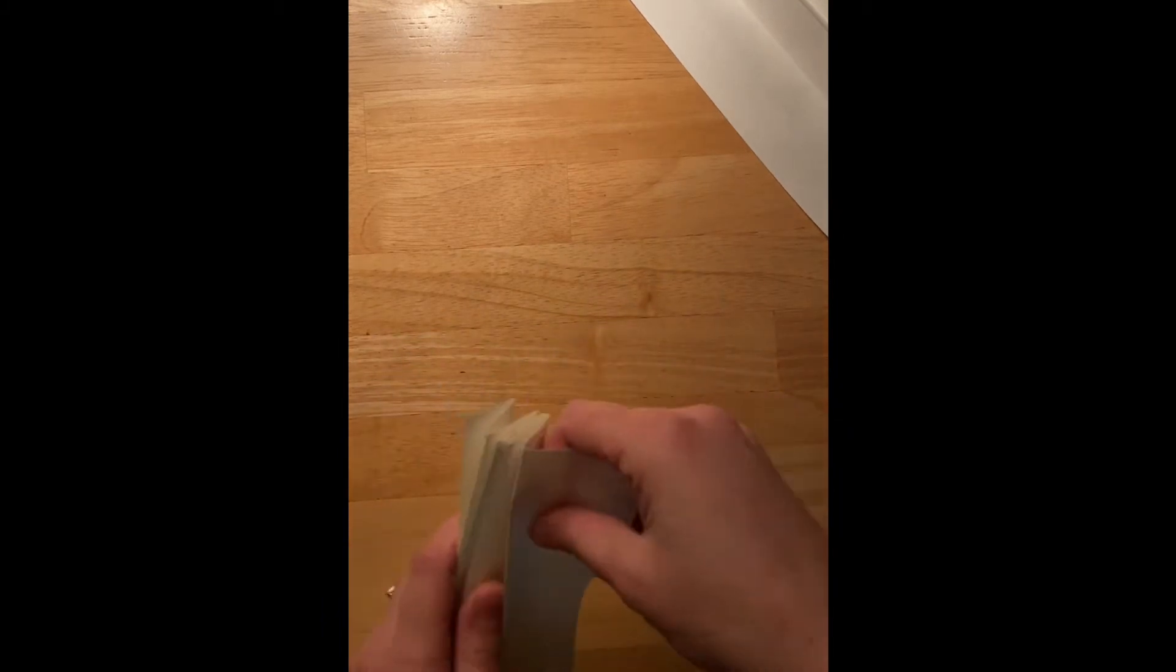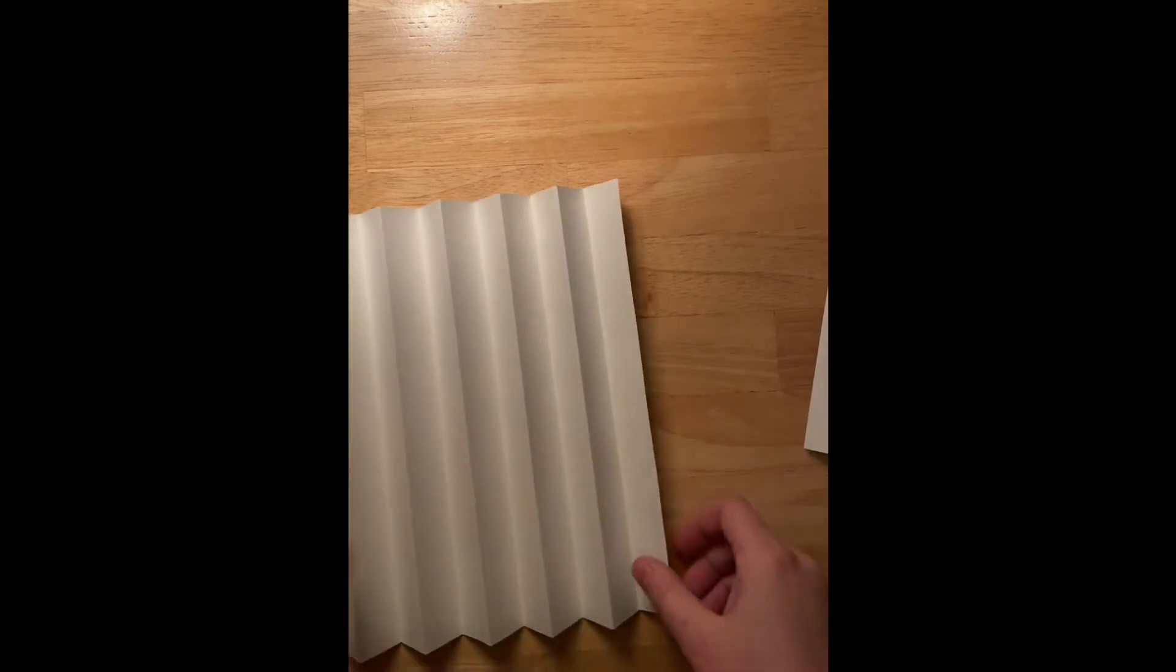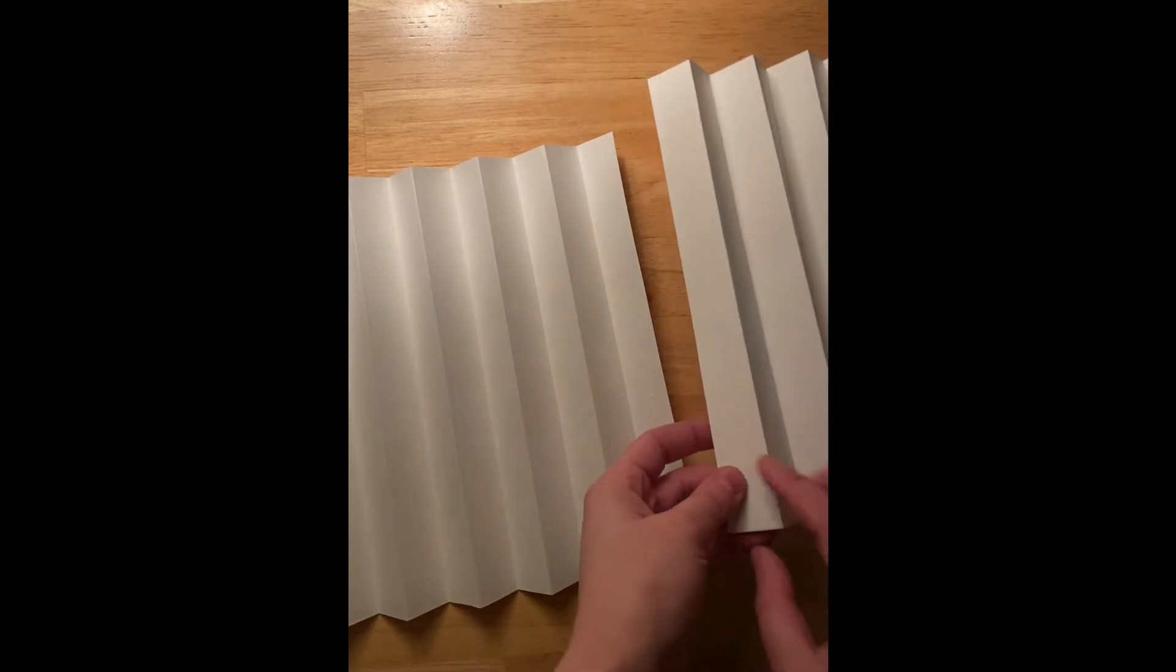I definitely recorded myself folding along those score lines for the first time, but I guess my memory was full so the camera stopped recording. So sorry, you guys missed the magic. But anyway, once you are done scoring all across those two pages, go ahead and fold your paper in that fan-like alternating fashion. With the score marks, the paper basically folds itself.